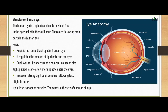Let us go through the structure of the human eye. We have given an image where you can see the anatomy of the eye. The human eye is a spherical structure which fits in the eye socket in the skull bone. First of all, you have the pupil — the round black spot in front of the eye. It regulates the amount of light entering the eyes, working like the aperture of a camera. In dim light, the pupil dilates to allow more light to enter; in strong light, the pupil constricts allowing less light to enter.